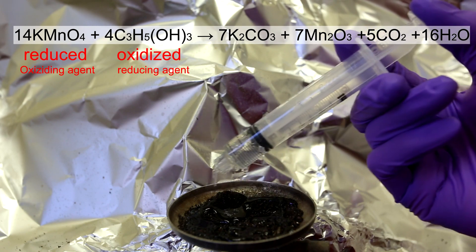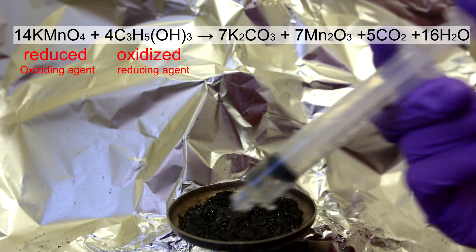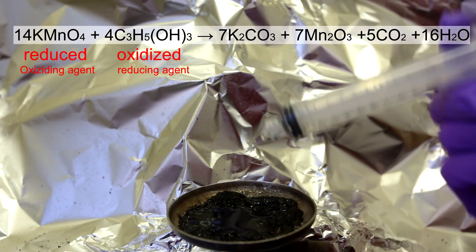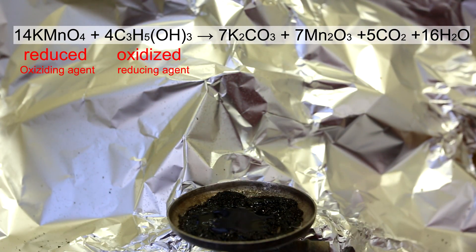The overall reaction is shown above. The potassium permanganate reacts with the glycerin to form potassium carbonate, manganese 3 oxide, carbon dioxide and water.